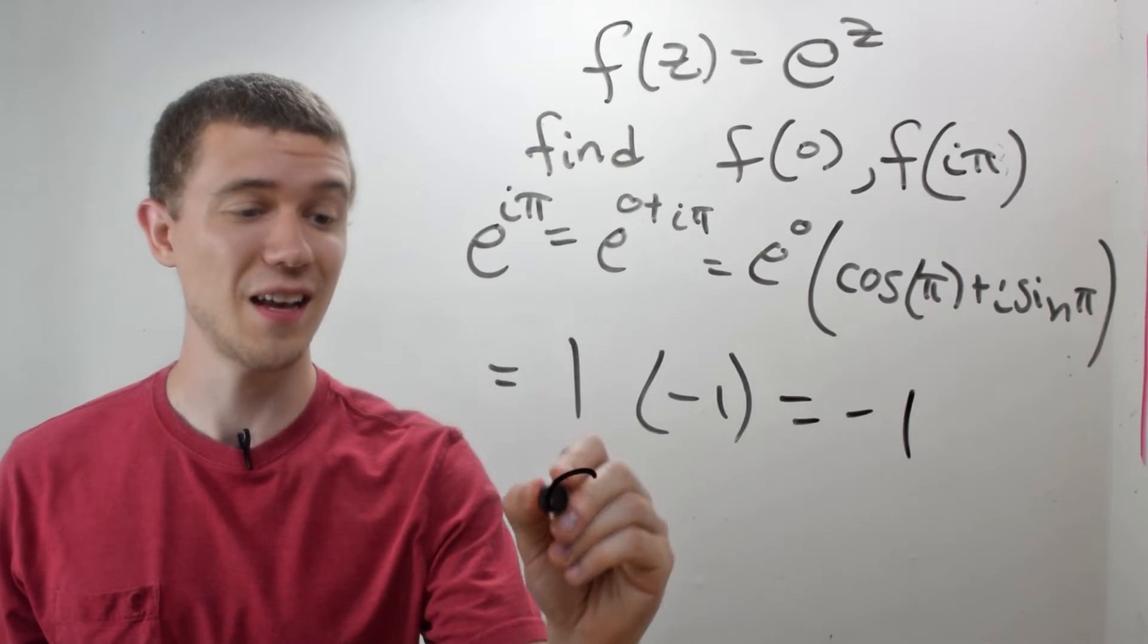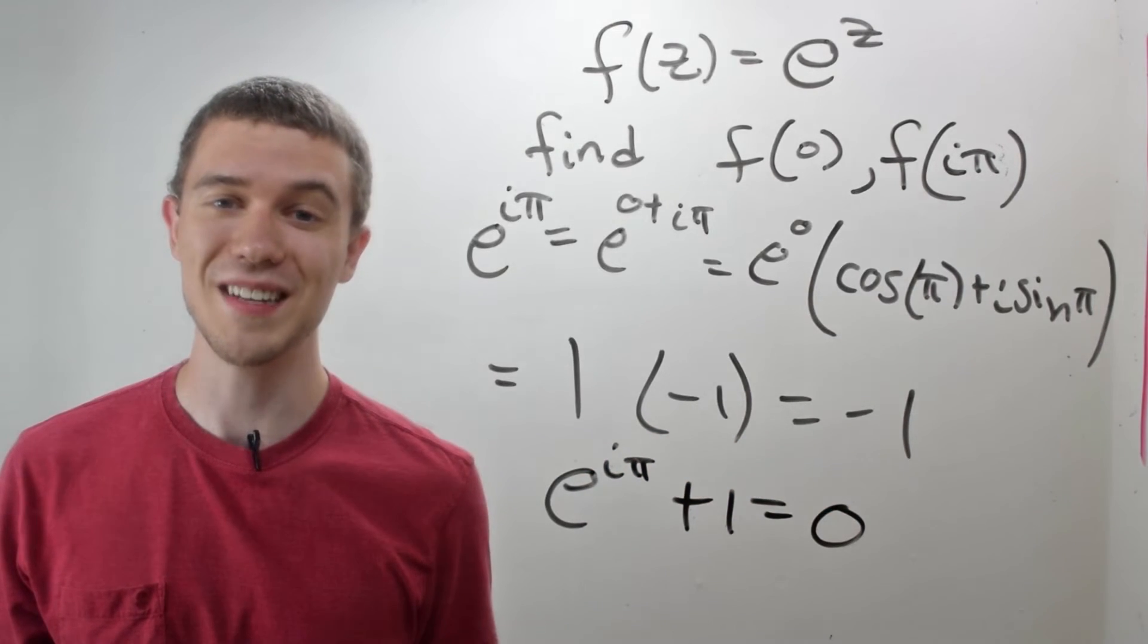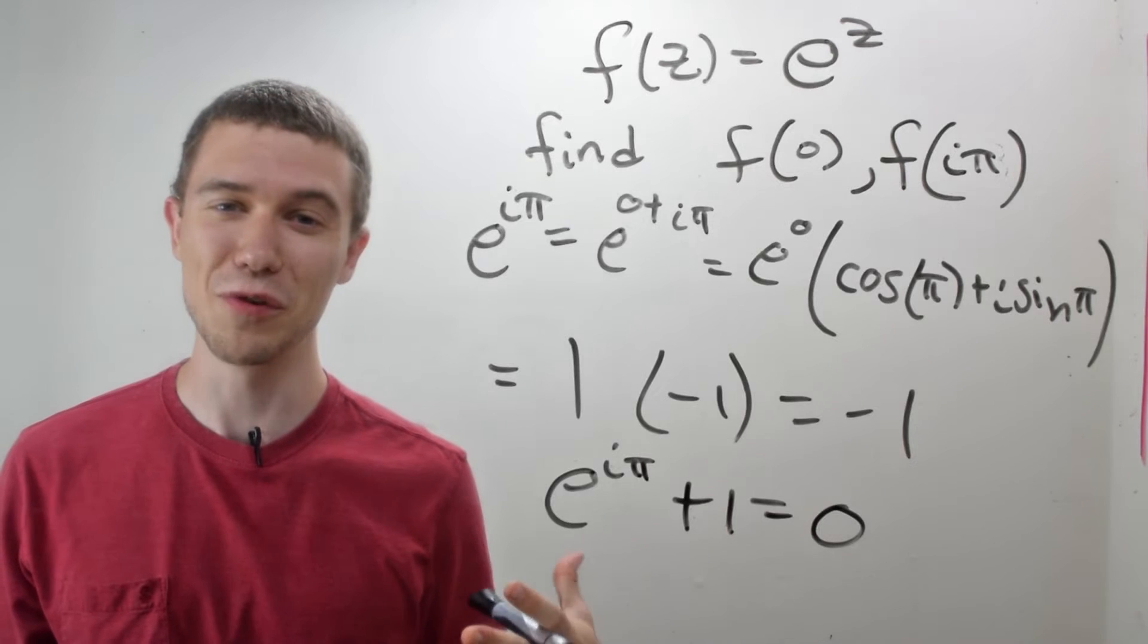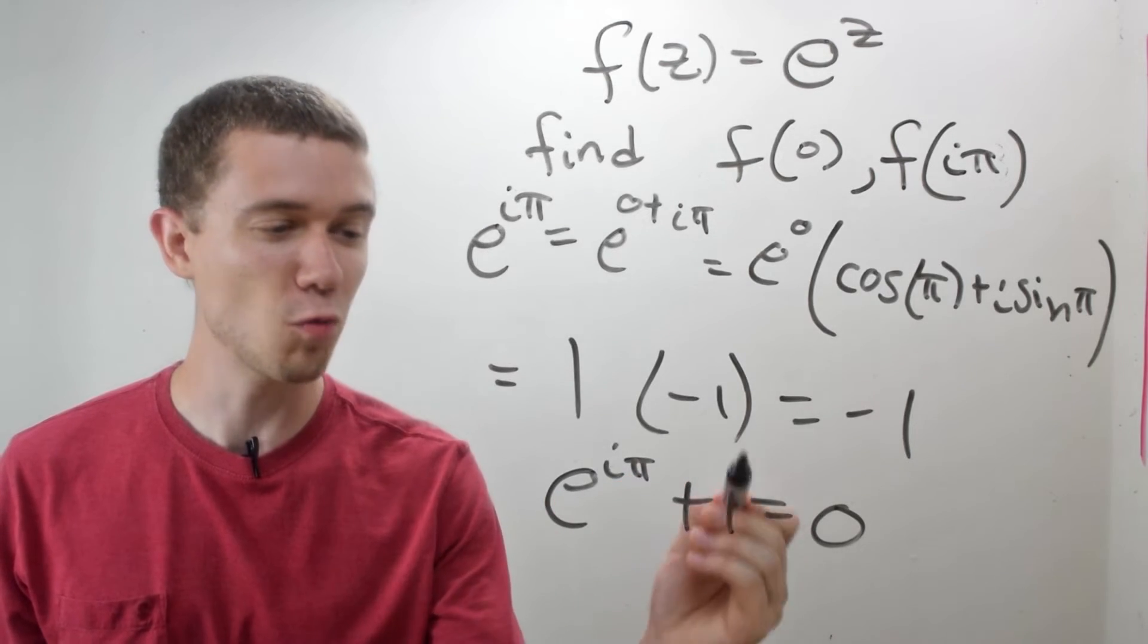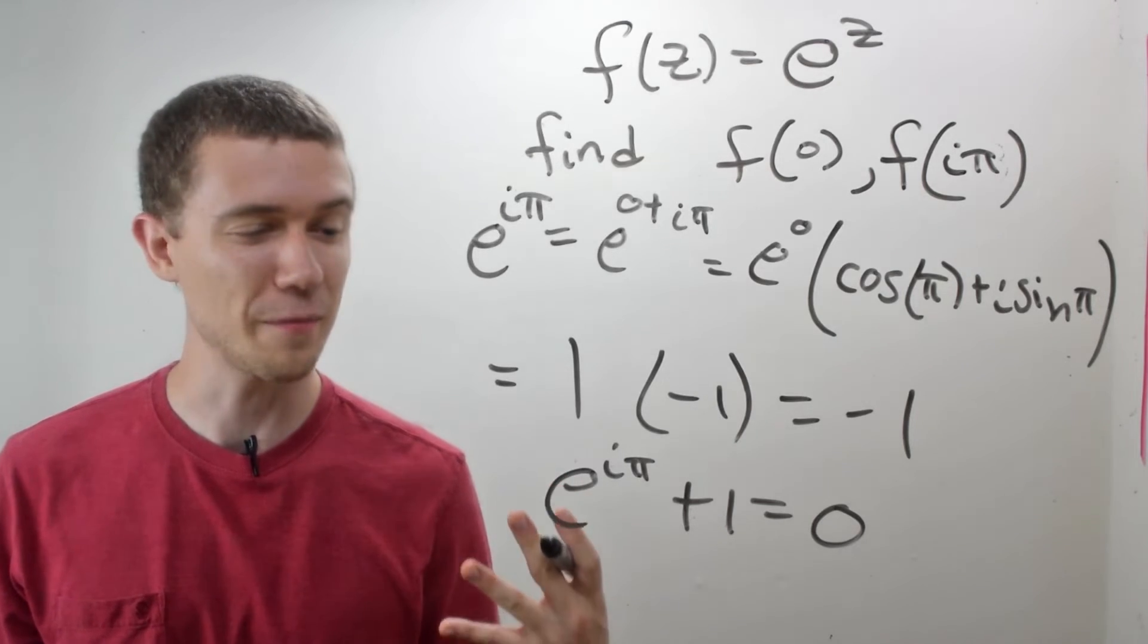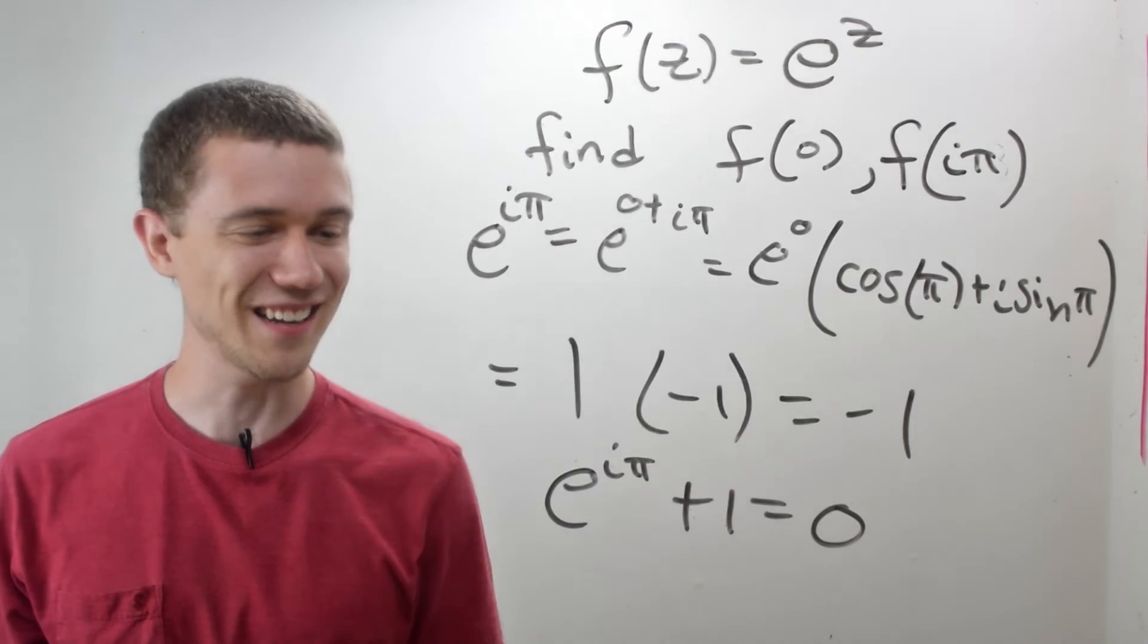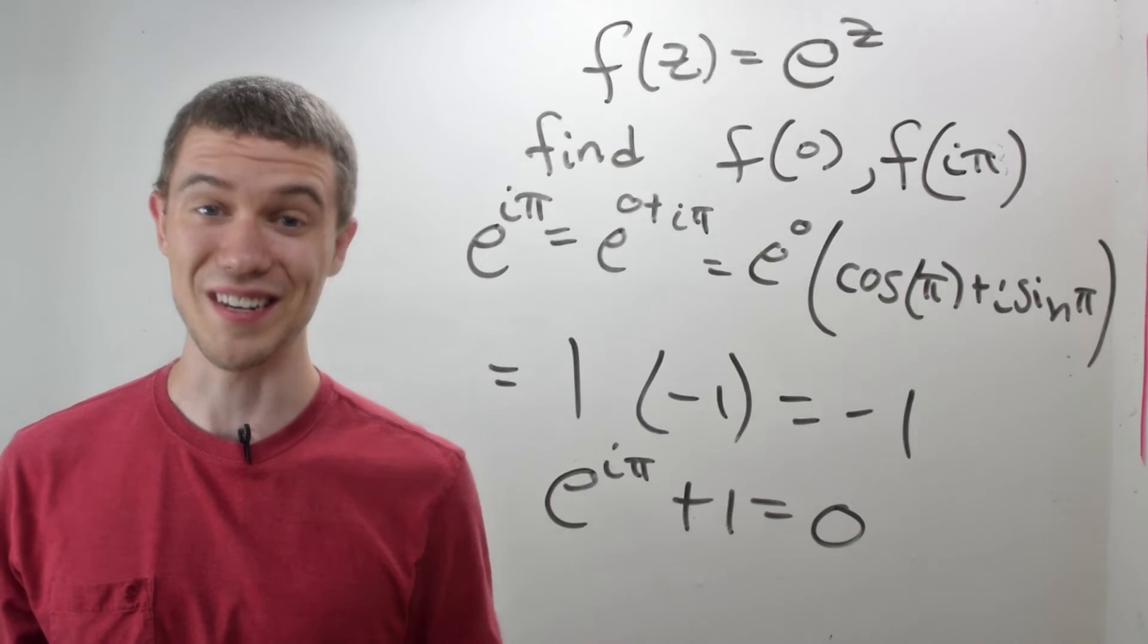Another way of saying that is e to the i pi plus 1 is equal to 0. This is also known as Euler's identity. And wow, could you ask for a better compact equation? You have e, i, pi, 1, and 0, arguably the five most important constants in all mathematics, wrapped up nice and neat in one equation. That's just great, isn't it?